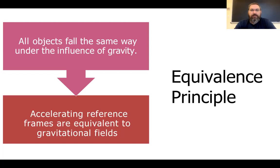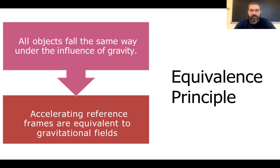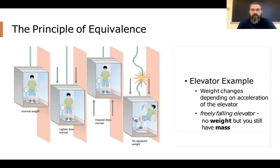There's a principle in general relativity called the equivalence principle. All objects fall the same way under the influence of gravity on Earth. That force of attraction causing acceleration can also describe how the Earth is in free fall around the Sun. More importantly, Einstein made the connection that an accelerating reference frame is equivalent to a gravitational field.